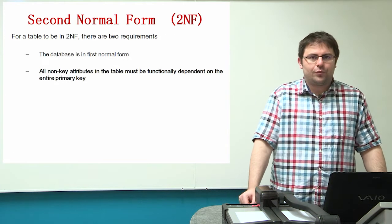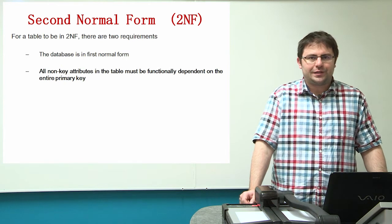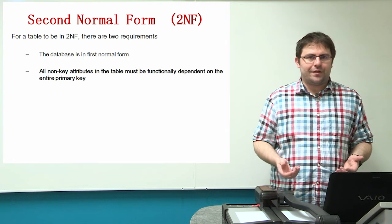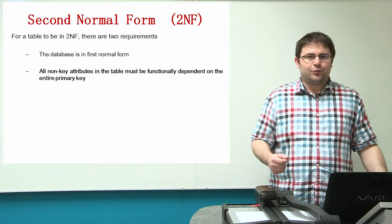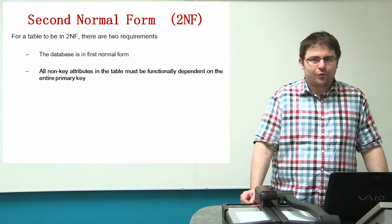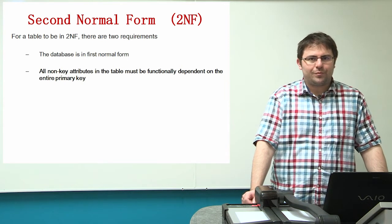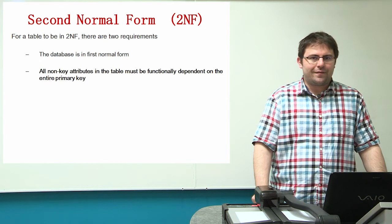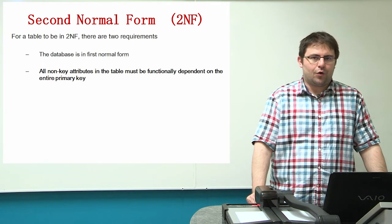In the second normal form, we need to have brought our initial table to the first normal form, meaning we will have generated two new tables from the original. Then we need to remember the following rule: all non-key attributes should depend on every part of the key. So we need to check in the two generated tables whether each non-key attribute depends on every part of the key.